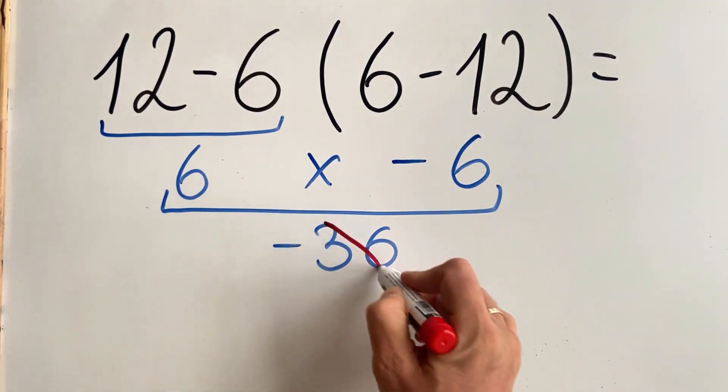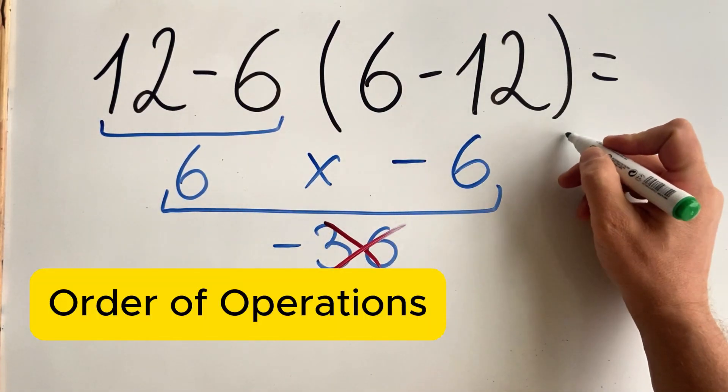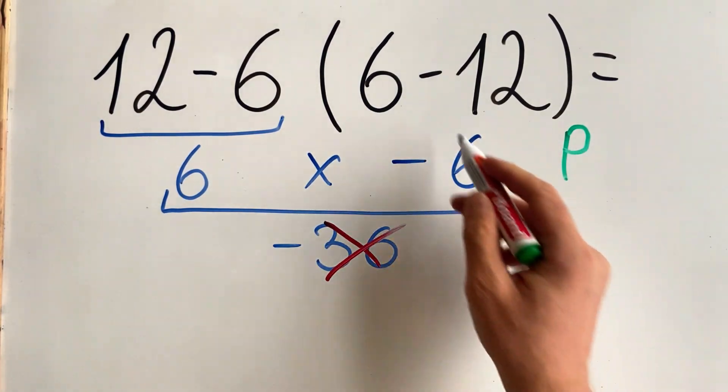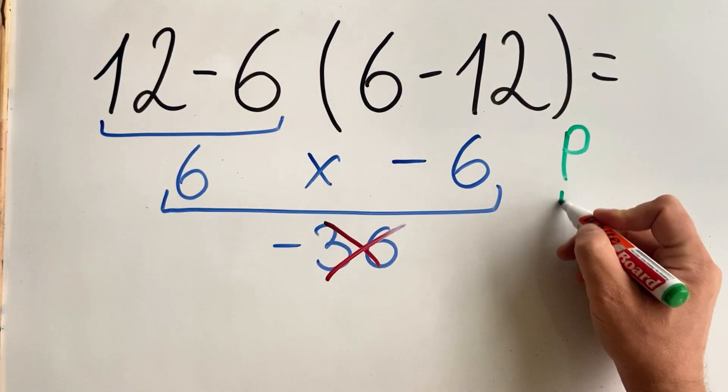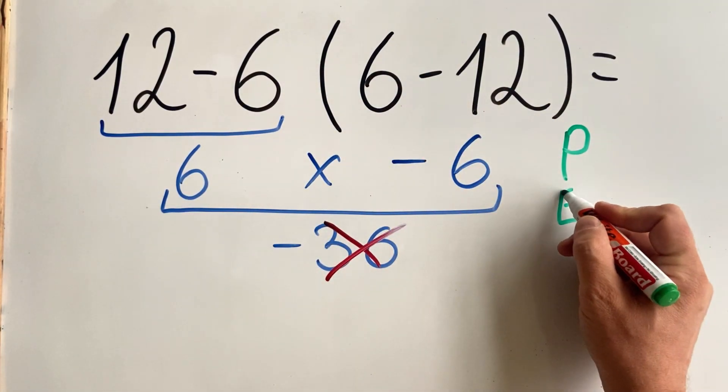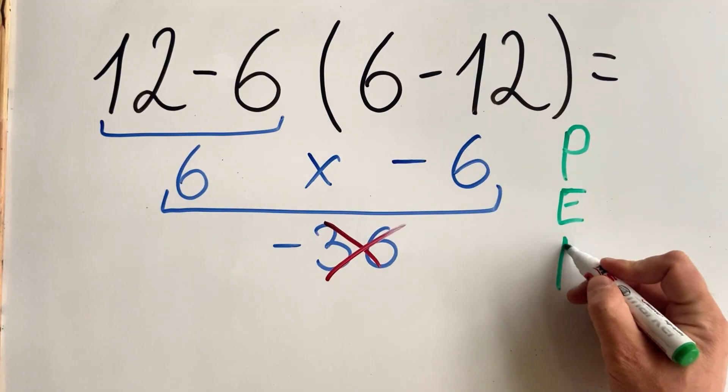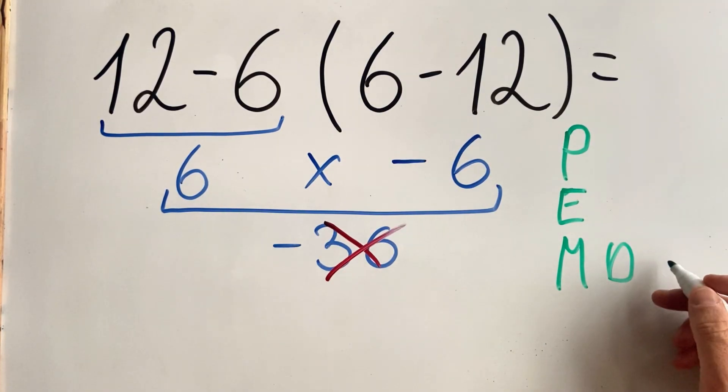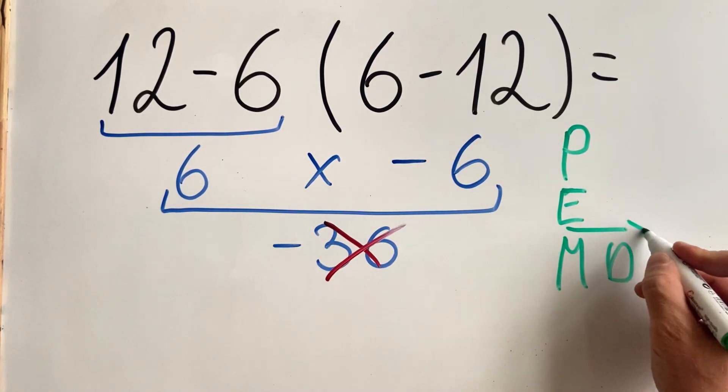But this answer is not correct because according to the order of operations we must first do what's inside the parentheses. Then we do exponents. We don't have it. Then we do multiplication and division from left to right.